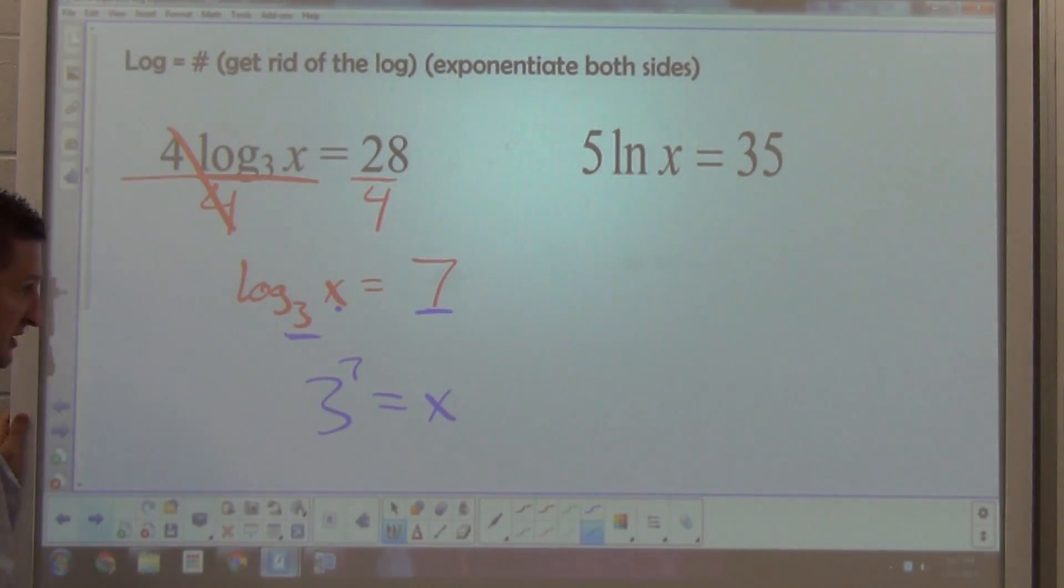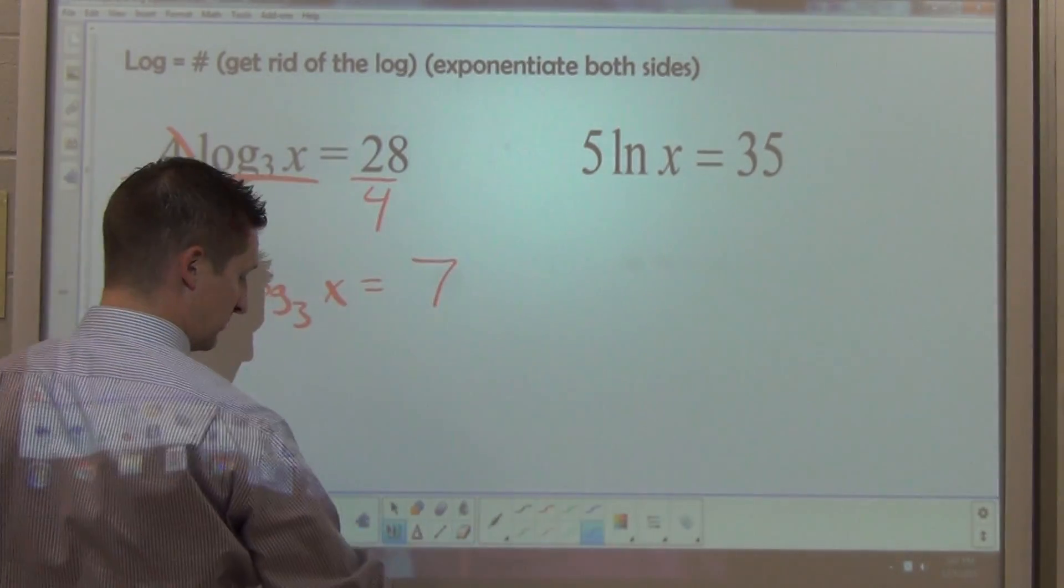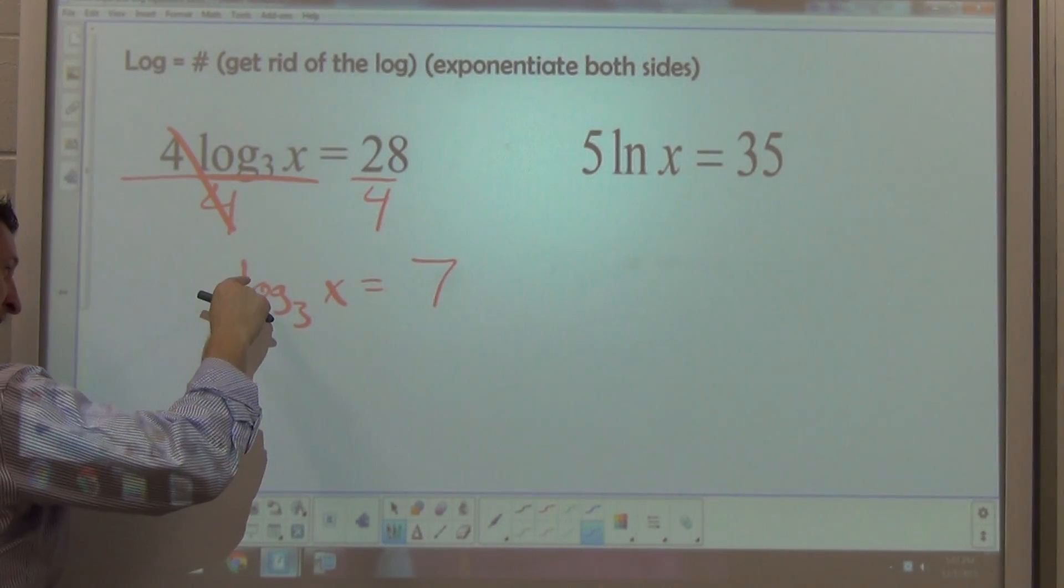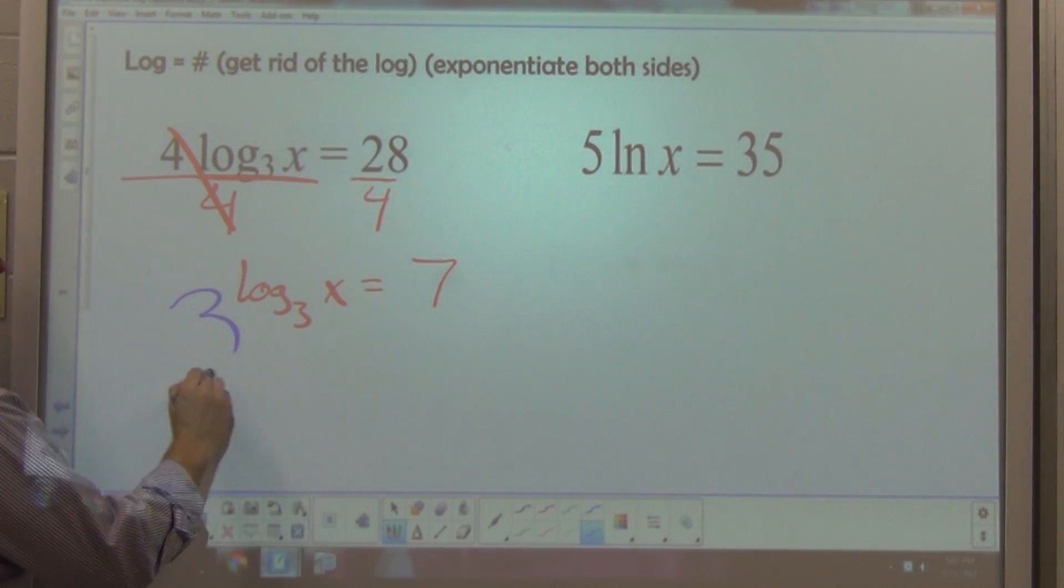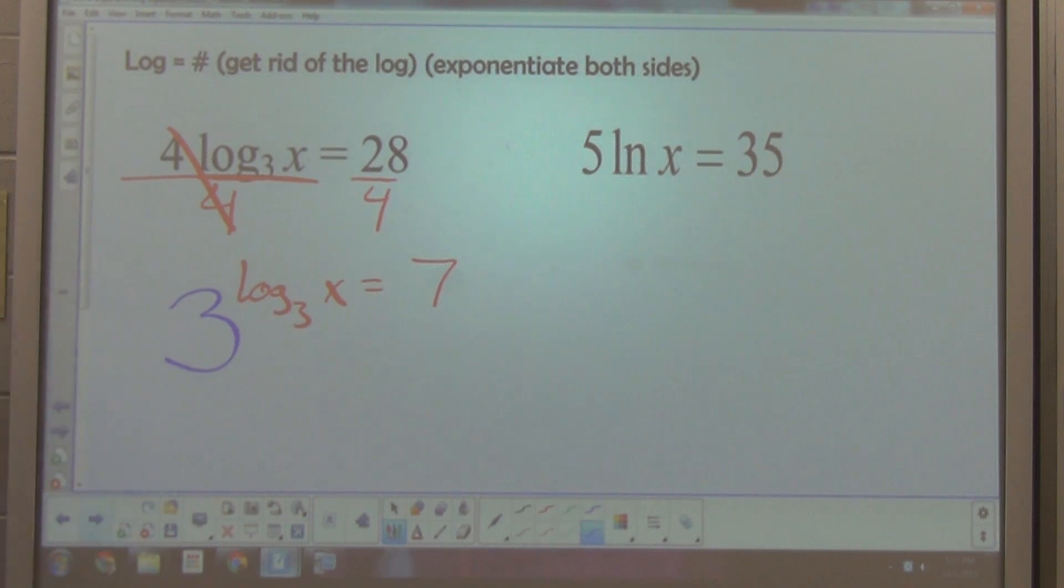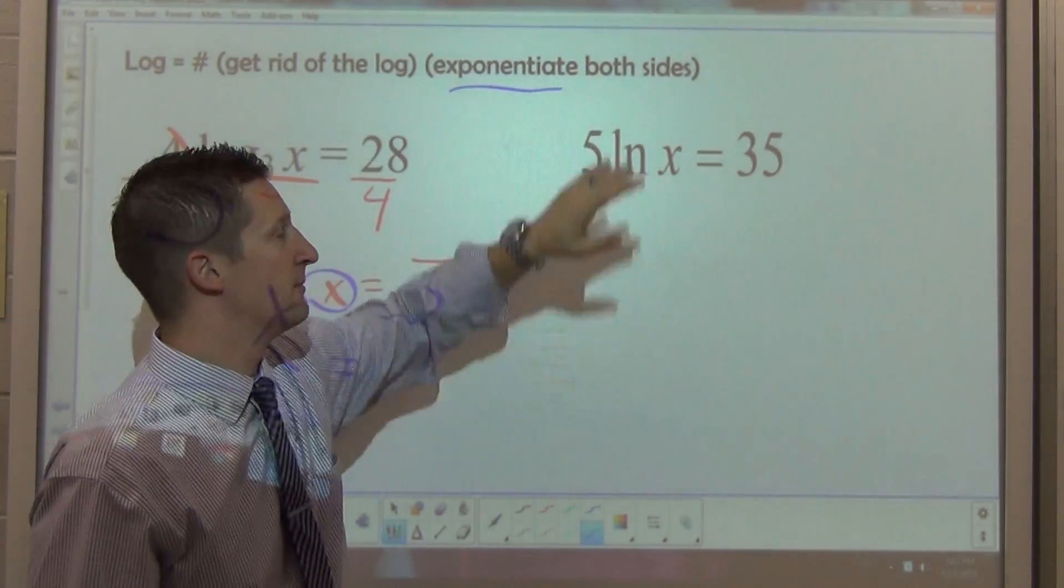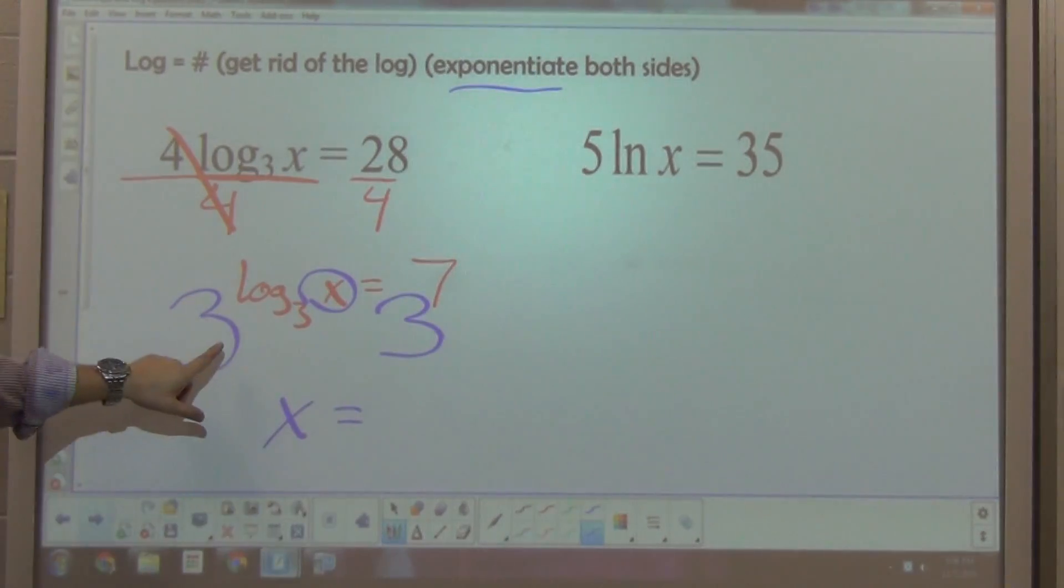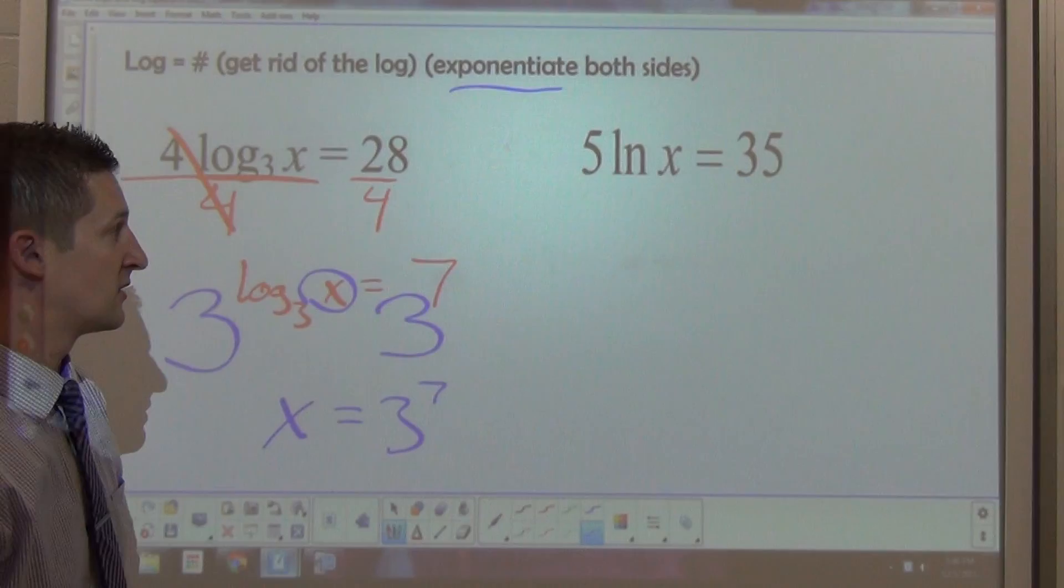The other way to think about this is to use inverse operations and get the x by itself. So if you're an algebraic thinker and you like having steps, here's what we would do. I am going to turn the log base 3 of x into an exponent. The base that I'm going to choose is 3. Because I remember from my inverse function properties, if I take 3 raised to the log base 3 of x, this is going to equal just x. I'm undoing the logarithm with an exponential equation. Now if I do something on one side, I better do the same thing on the other side. So this step is called exponentiating both sides. Turn both sides into an exponent with a base that matches the base of the logarithm. Now x equals 3 to the 7th, you can type that into a calculator and get a big number.